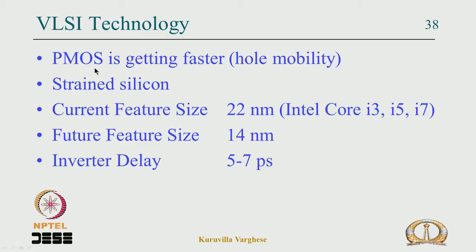With current technology such as strained silicon, PMOS is getting faster. Strained silicon means the silicon lattice is strained by a deposit on top, stretching the lattice so electrons and holes can move faster. The current feature size is 22 nanometers — Intel Core i3, i5, and i7 are fabricated at this node. The next technology being developed is around 14 nanometers, where inverter delay is of the order of 5 to 7 picoseconds.